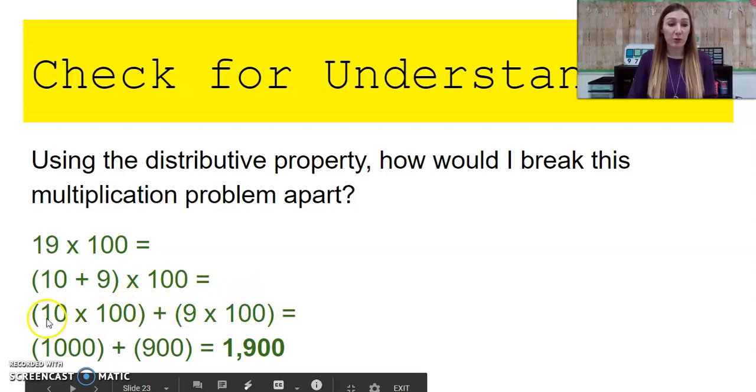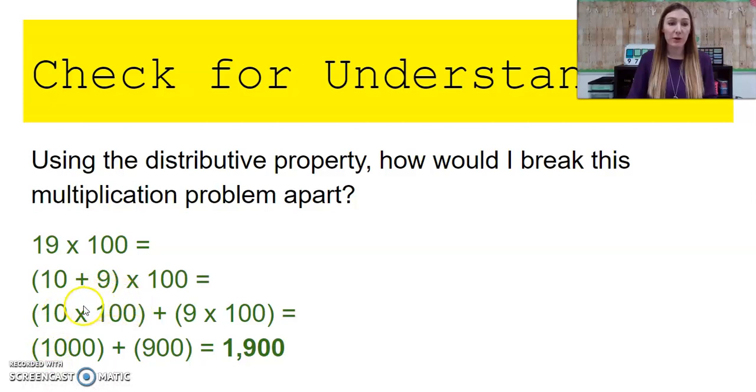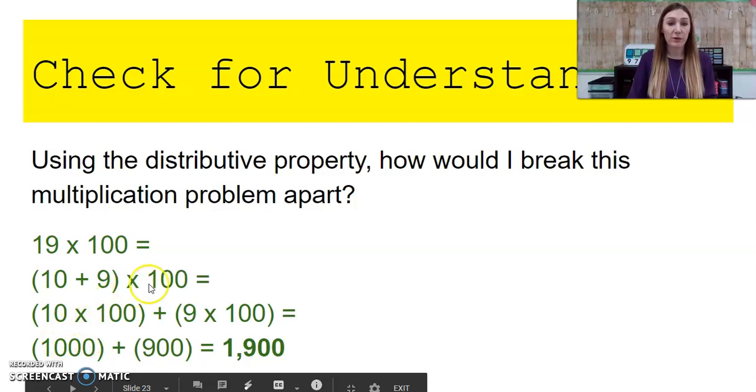So again, I'm just going to multiply 1 times 1, getting me 1. And then I have 1, 2, 3 zeros. So in my product, I should have 1, 2, 3 zeros. Then I'm going to multiply 9 times 100.